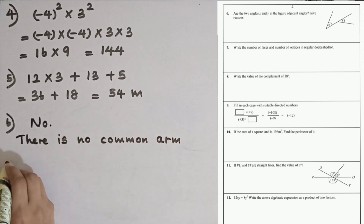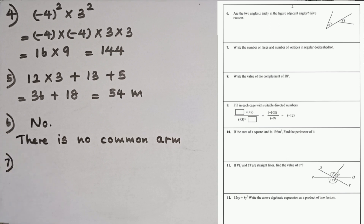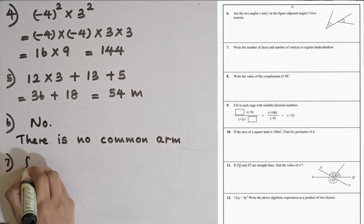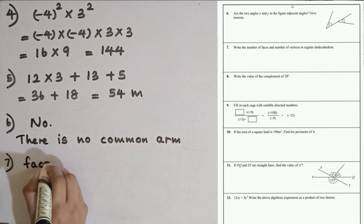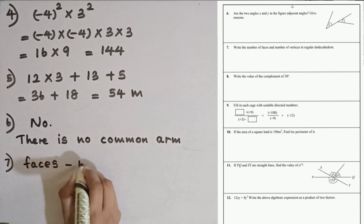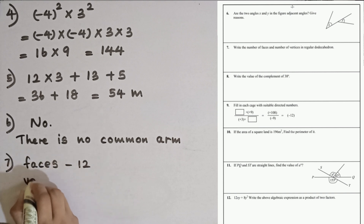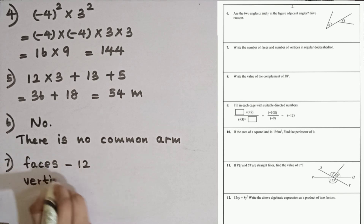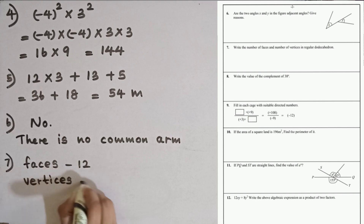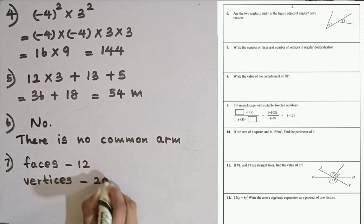Question number 7. Write the number of faces and number of vertices in a regular dodecahedron. In a regular dodecahedron, the number of faces is 12, there are 20 vertices, and also 30 edges.